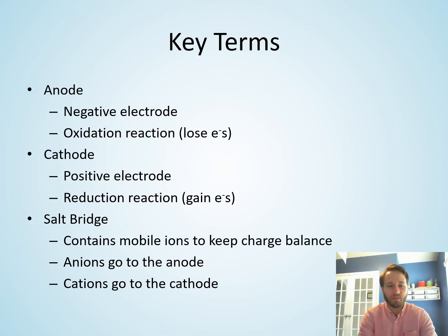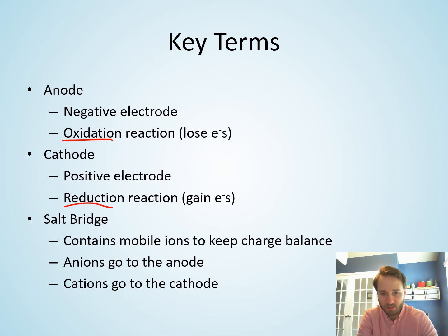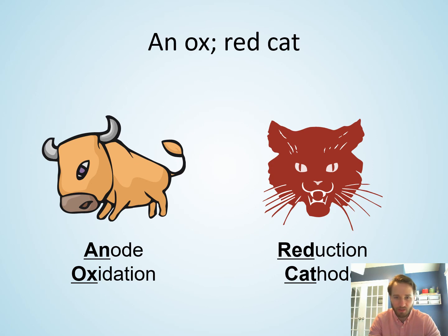So again, the key things here are your anodes and cathodes and your salt bridges. Anodes have an oxidation reaction; cathodes have a reduction reaction. The salt bridge allows anions to flow to the anode and cations to flow to the cathode to maintain charge neutrality in your solutions. Another way to memorize this is 'anox and red cath' — anode, oxidation, reduction, cathode. You just need to remember that at the anode you have the oxidation reaction and at the cathode you have the reduction reaction. Thank you very much.